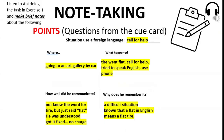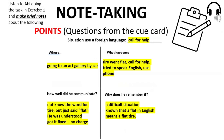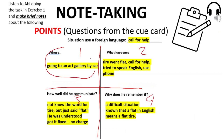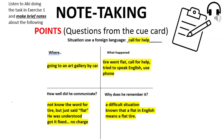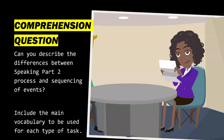For note-taking in IELTS Speaking Part 2, we use the window method — four quadrants. You note: where is that, what happened, how well did he communicate, and why does he remember. You can check the earlier training session on the introduction to IELTS Speaking Part 2 to learn how to take down notes.